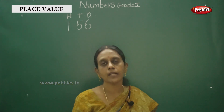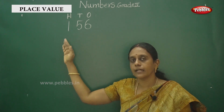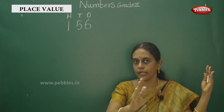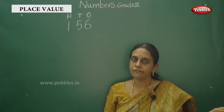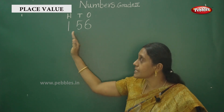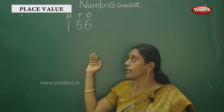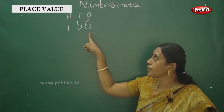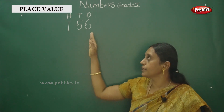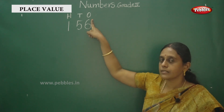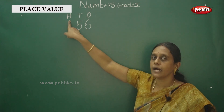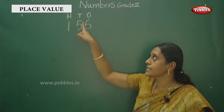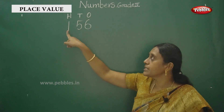Place value: ones, tens, hundreds. The digits go from right to left — ones on the right hand side, tens in the middle, and hundreds on the left hand side. O stands for ones place, T stands for tens place, and H stands for hundreds place.